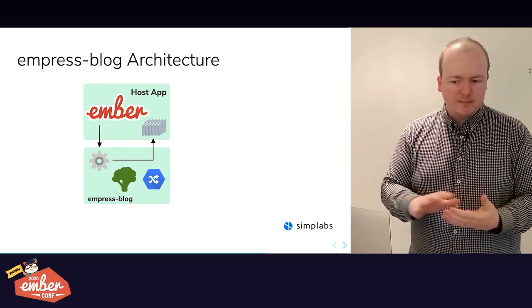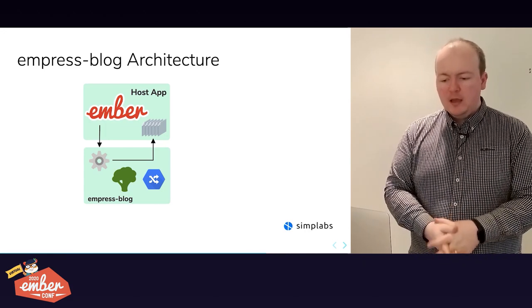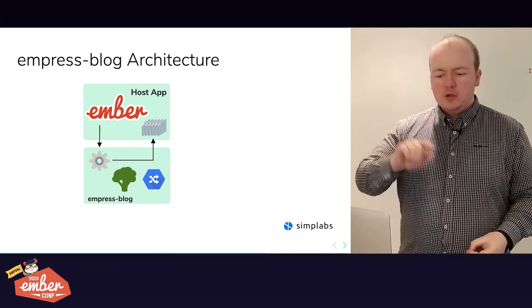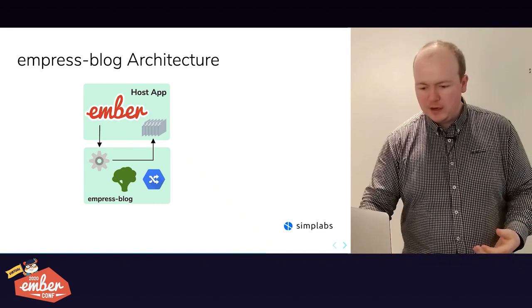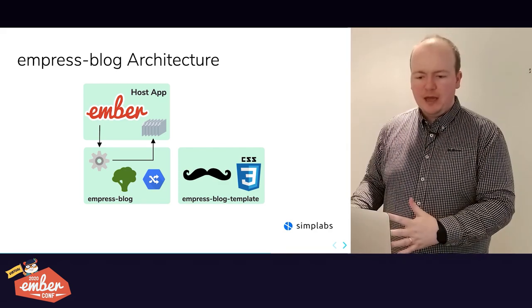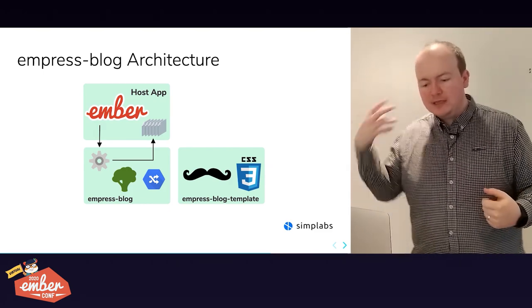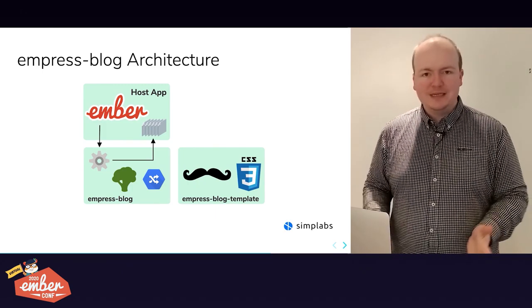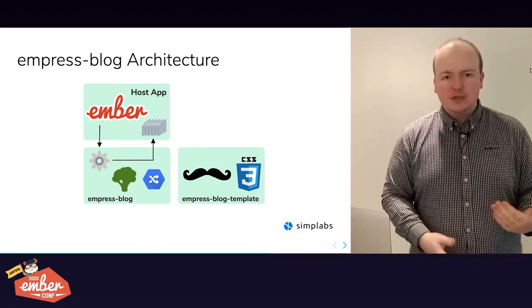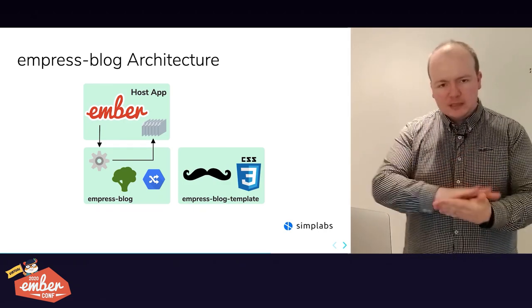Your Ember app essentially just contains the content — it's an empty shell. The build system, build-time logic, and Broccoli stuff all happen inside empress-blog, as do the route definitions. The templates and CSS happen in a separate template add-on, which means your template add-on is essentially just HTML and CSS with one or two Ember template syntaxes — each, ifs, and the like.